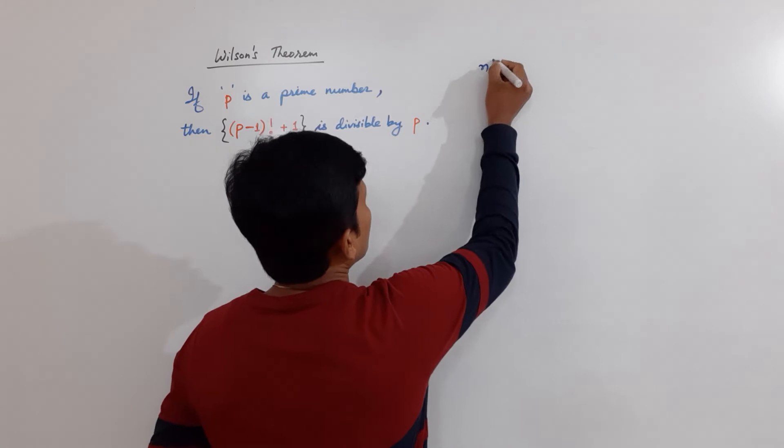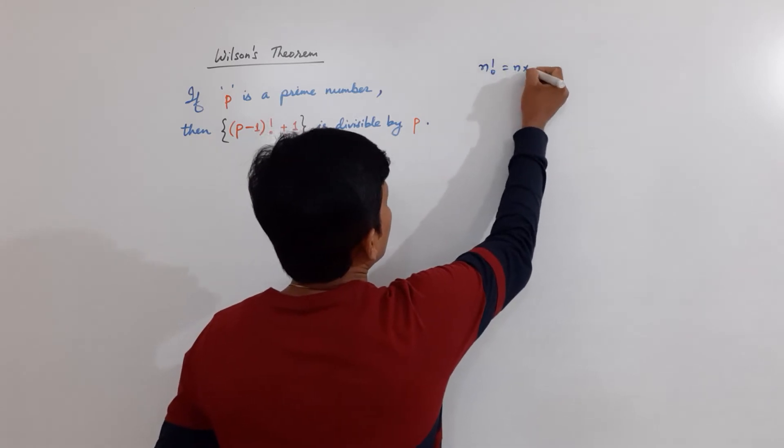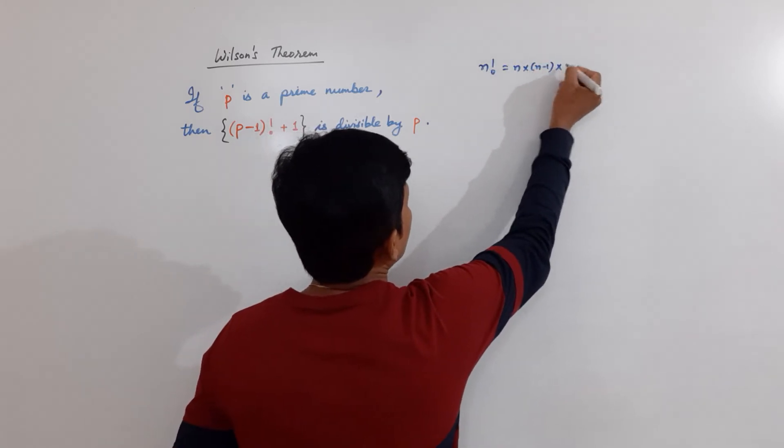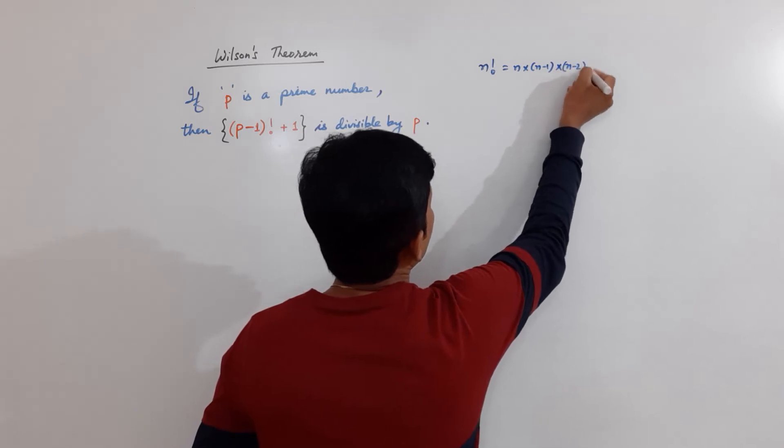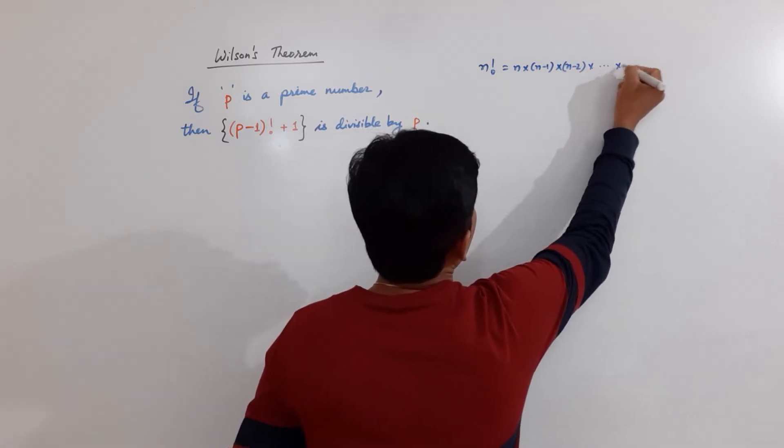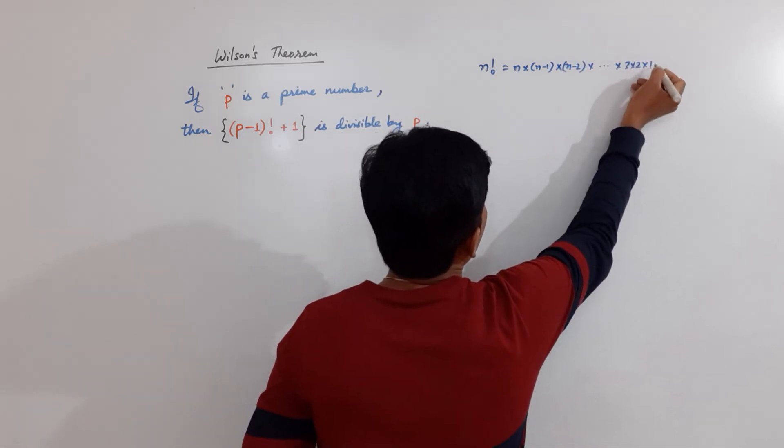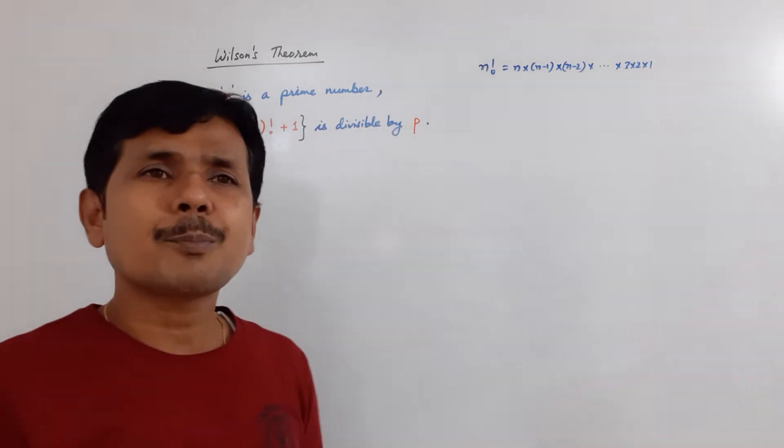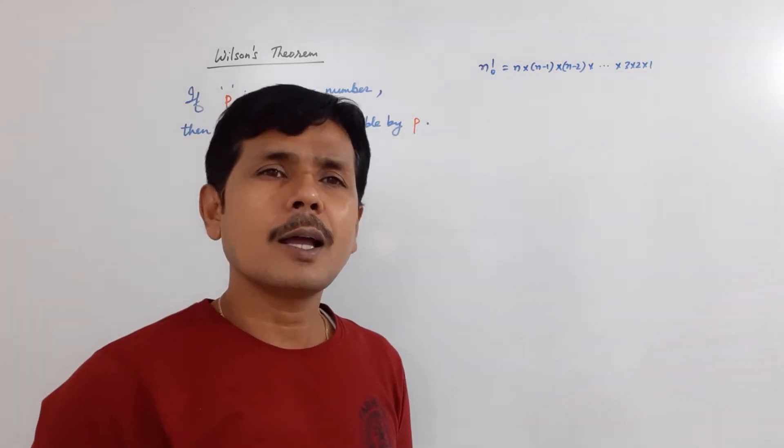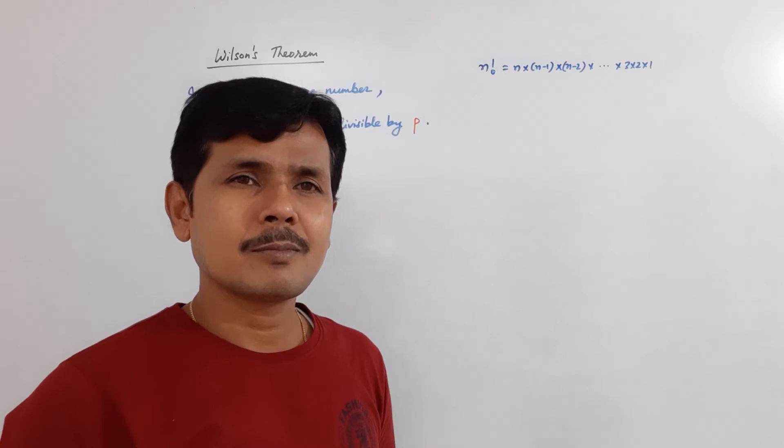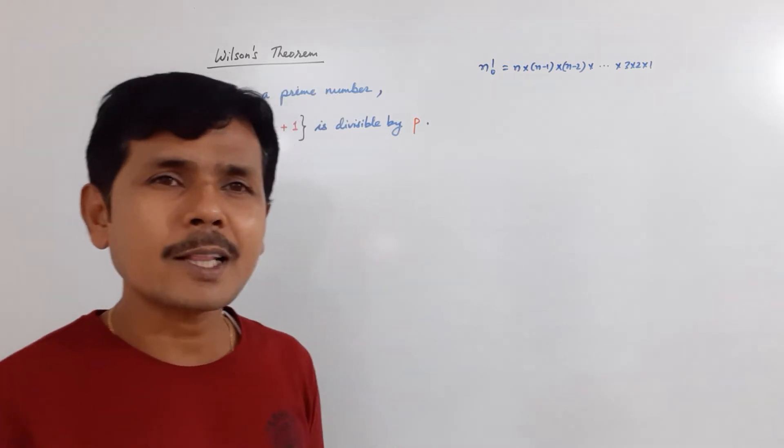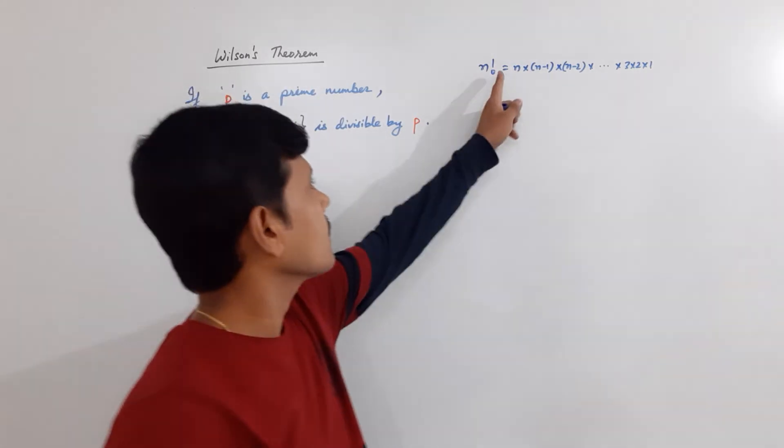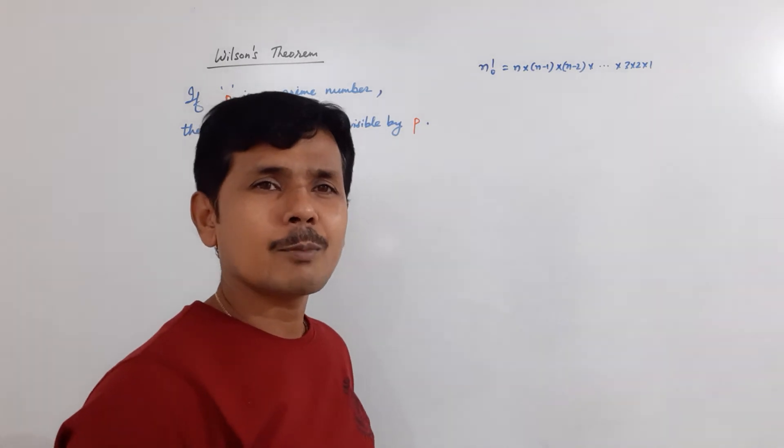Factorial n means n into n minus 1 into n minus 2 times dot dot dot till 3 into 2 into 1. That means it is the product of n natural numbers. You can write it n factorial, where n belongs to natural number.